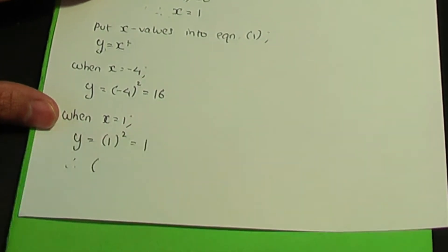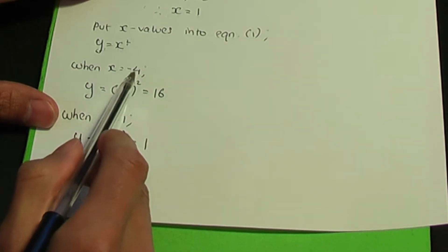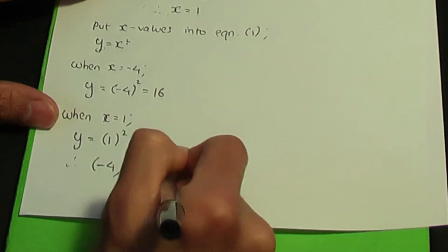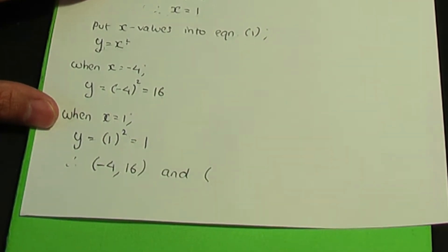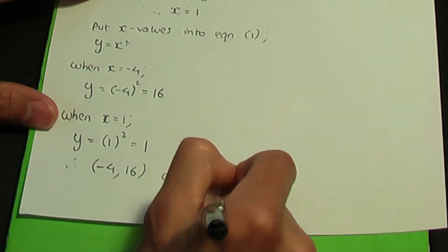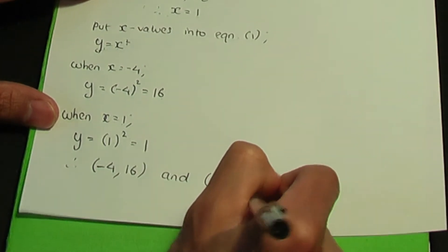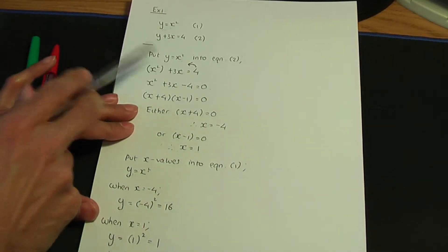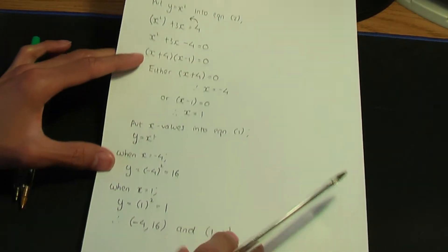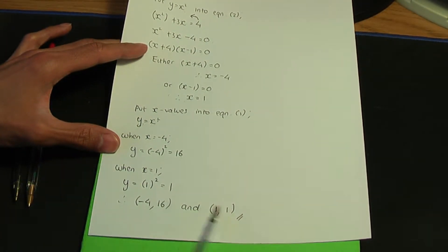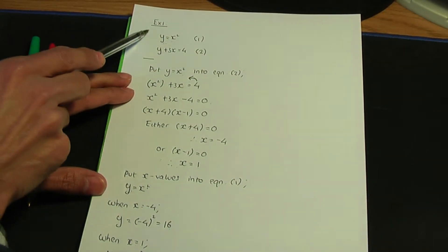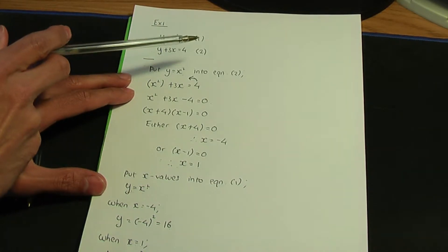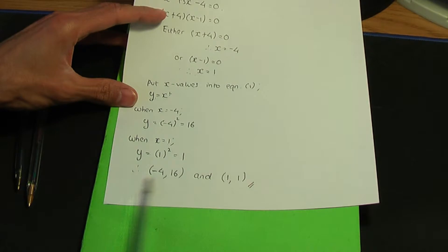So we have two points. The first point has coordinates x equals minus 4 and y equals 16. The second point has coordinates x equals 1 and y equals 1. So there are two intersection points for this pair of equations.